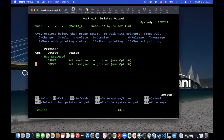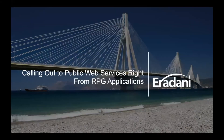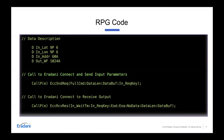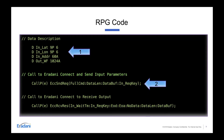Let's take a look at the code required to do that. All I needed to do was describe the data — identify the fields: latitude, longitude, the address, and a field for the data coming back. Then I call the Eridani Connect procedure, Eridani Connect Send Request, which sends the data out to the web service. Then I simply call another Eridani Connect procedure, Eridani Connect Receive Result, which brings the result back to my RPG program.